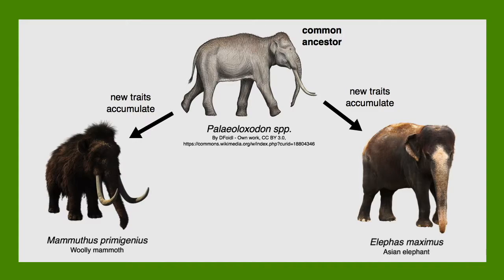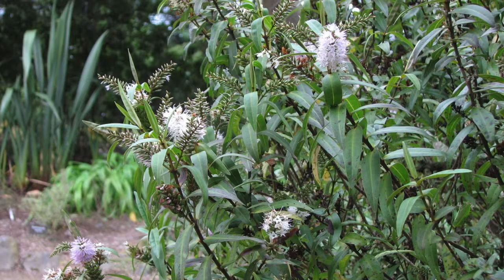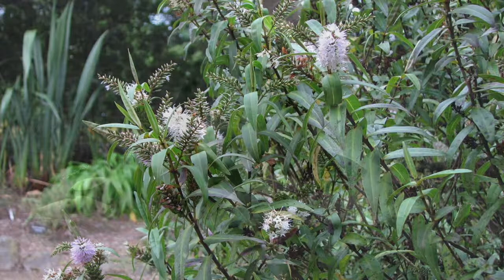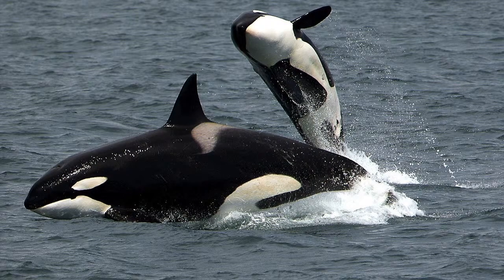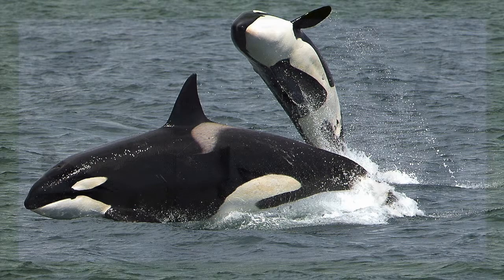Two new species from one common ancestor. For example, the genus Hebe contains about 90 species that all diverge from each other within the last few million years. And those orca populations we mentioned before? In the future, they might evolve into two separate species of killer whales — one species that migrates every year and one that doesn't.